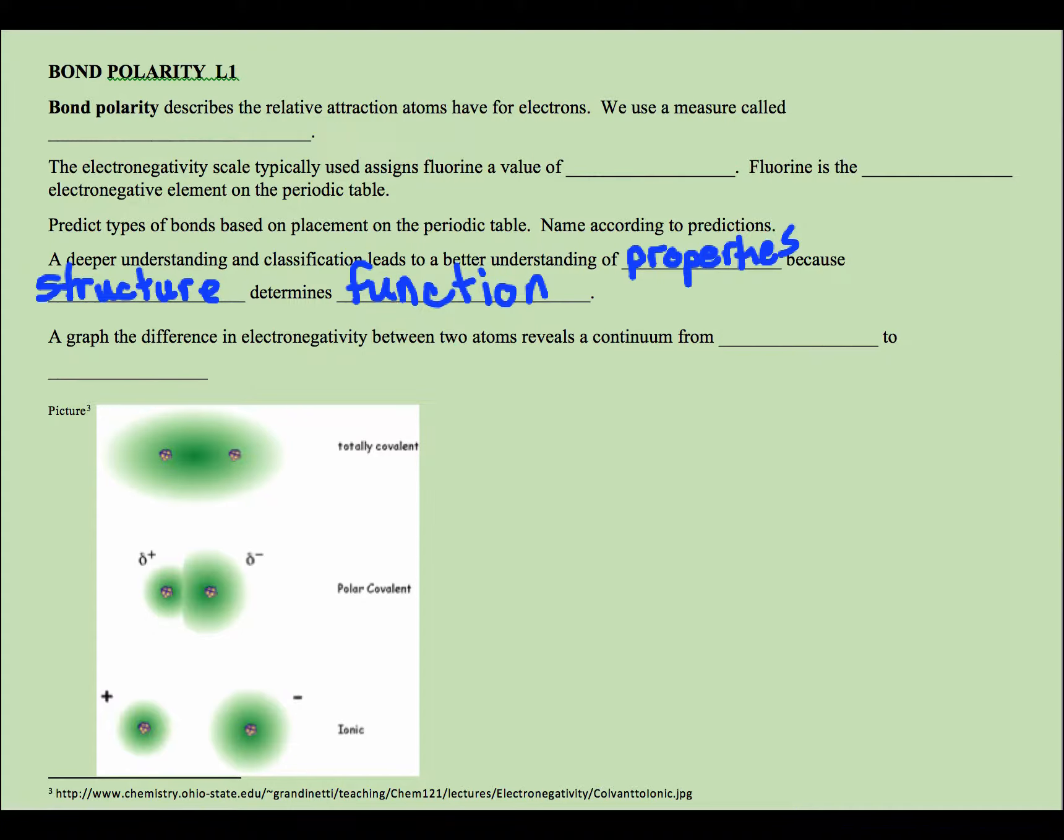If we're going to be looking at a deeper level, what we want to do is look at the continuum from zero to four. So zero would be totally covalent. Examples of your totally covalent, and there's more than this, but examples would certainly be your diatomics. So X minus X is zero.